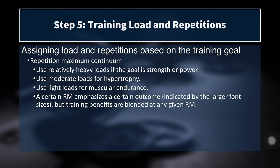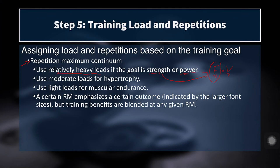Now we'll look at a graphic describing the number of repetitions to use when training for various goals — this is called the repetition maximum continuum. In general, we want to use relatively heavy loads if the goal is strength or power. We're not going to get strong using lightweights, and we won't develop power if loads are too light. Remember, power equals force times velocity — we want to maximize force, velocity, or find a balance. Strength training maximizes the force component, while sprint training, plyometrics, and sport practice maximize the velocity side.